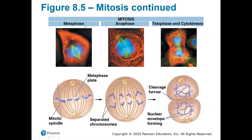That leads us to the third phase of mitosis, which is metaphase. Metaphase is the middle of mitosis. One way you can remember metaphase is that the chromosomes line up in the middle of the cell — they line up on the metaphase plate, which is literally the middle of the cell. It's an equal distribution between the centrosomes. Those mitotic spindles have attached to the centromere of the chromosomes so they can pull the sister chromatids apart.